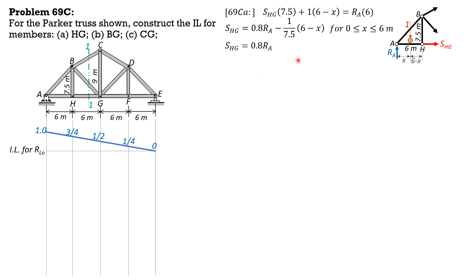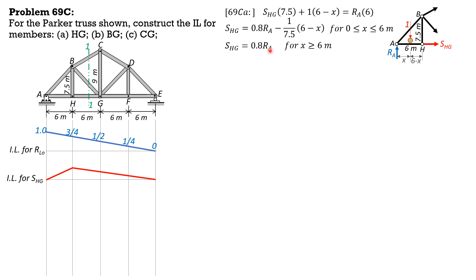When x is 0, S_HG is 0.8·(1) minus (1/7.5)·6. When x is 6, the term (6 minus x) becomes 0, so S_HG = 0.8·R_A, and R_A is 3/4, giving 0.8 × 3/4 = 0.6. That is the maximum value. Because when x is greater than 6, R_A is decreasing, so S_HG decreases linearly as well. Therefore 0.6 is the maximum ordinate, and that's the influence line for member HG.